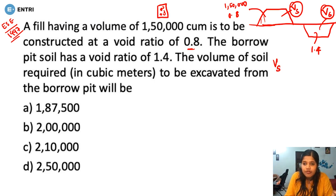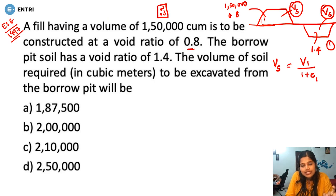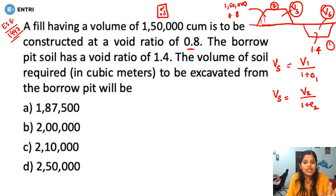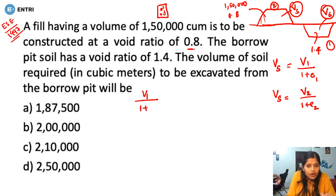The volume of solids is equal to V divided by (1 plus e). For the first case (excavation), volume of solids equals V1 divided by (1 plus e1). For the second case (fill), volume of solids equals V2 divided by (1 plus e2). Since the volume of solids is the same, we equate both sides: V1 divided by (1 plus e1) equals V2 divided by (1 plus e2).